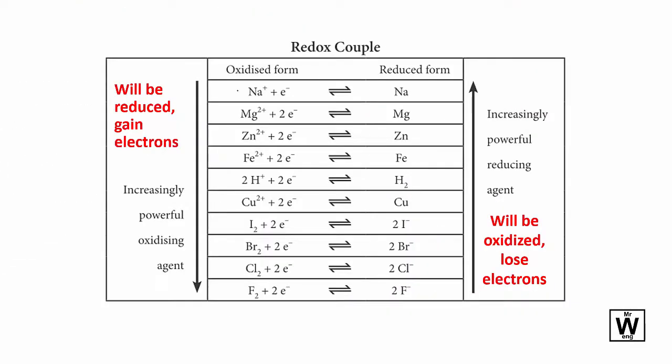The reduced form is an increasingly powerful reducing agent. If it's a reducing agent, it itself gets oxidized, so it loses electrons. So in this particular case, this one will want to go in this direction, losing electrons.